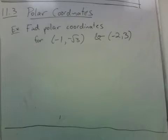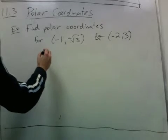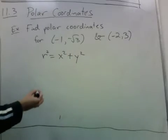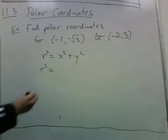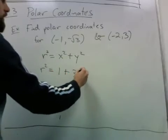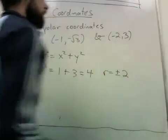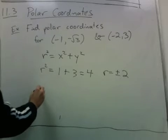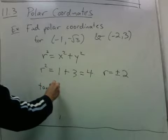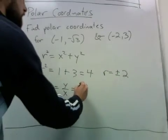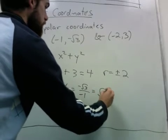So here's an example. We want to find polar coordinates for these two points. These are regular coordinates. And so the way we can do this, well, finding the length is really easy because r² = x² + y². So at this point, r² is 1 + 3, which is 4. So r can be 2 or minus 2. And we know that tangent theta equals y over x. And y over x is negative √3 over negative 1, or just √3.